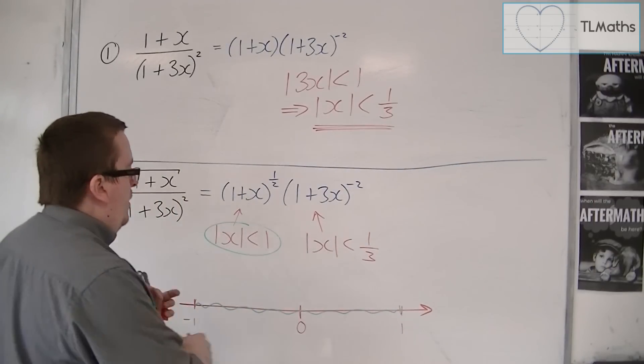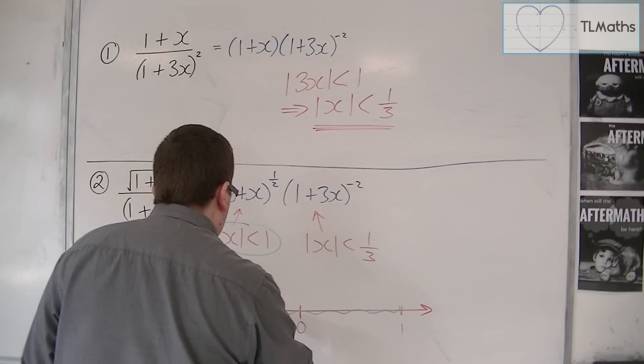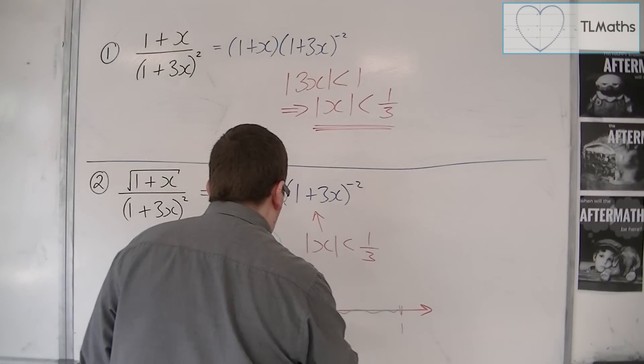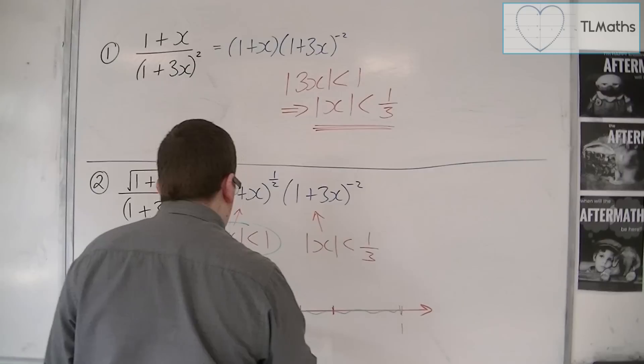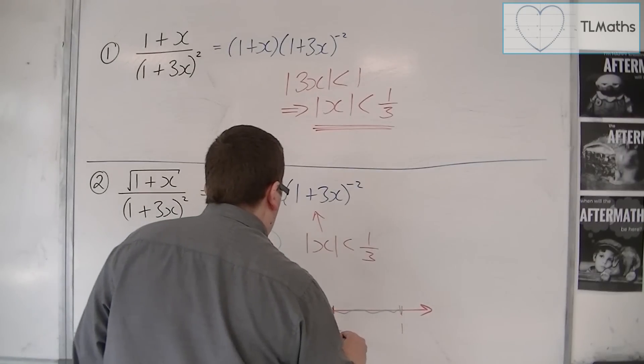So for mod x is less than 1 third, well, 1 third is approximately there, minus 1 third and 1 third. And so that one is valid for any value between minus 1 third and 1 third.